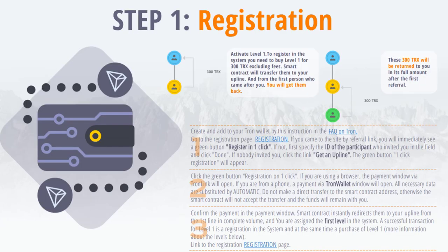Step 1: Signing up. Activate level 1. To register in the system, you need to buy level 1 for 300 TRX without commission. The smart contract will transfer them to your upline, and from the first person who comes after you, you will get them back.